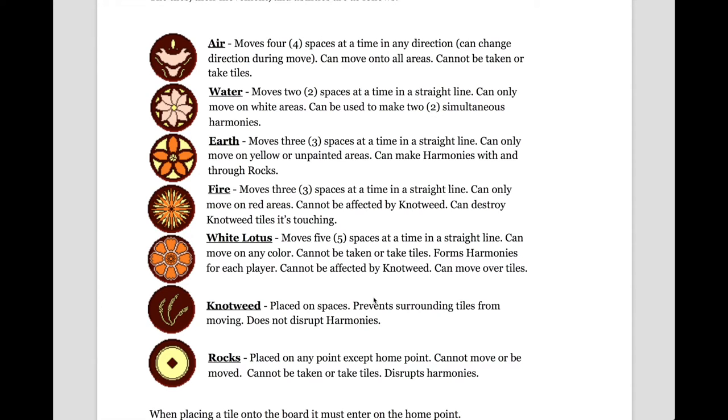The earth tile moves three spaces at a time in a straight line. It can only move on yellow or unpainted areas, and can make harmonies with and through rocks. So, rocks will be described later, but they basically prevent harmonies, whereas earth can harmonize through them.